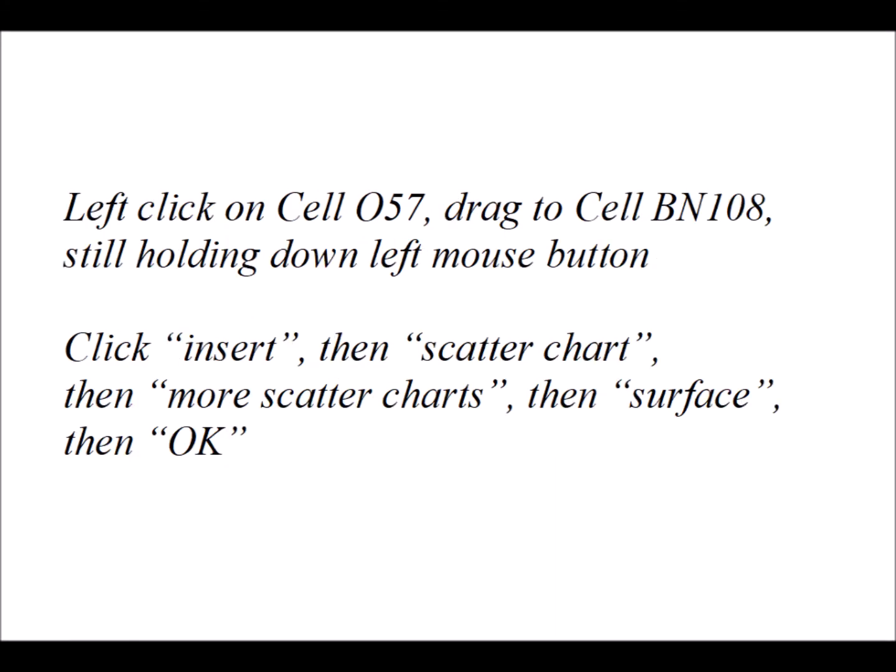Then to visualize this type of chart, again we're going to left click on O57, drag and hold to cell BN108. Then we're going to go up top, click on insert, then scatter chart, then more scatter chart, then surface, then OK. It's very similar to what we did to visualize the eigenfunctions. We're just using a different area of data to do it.